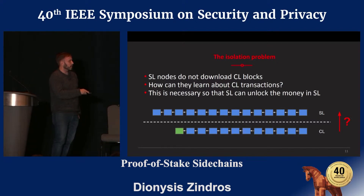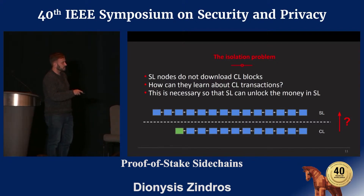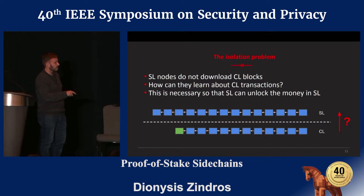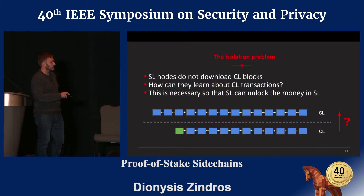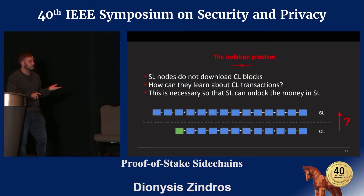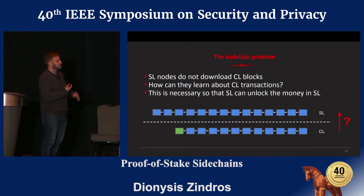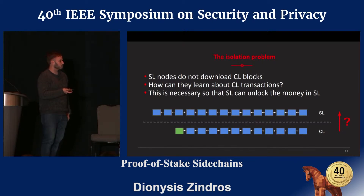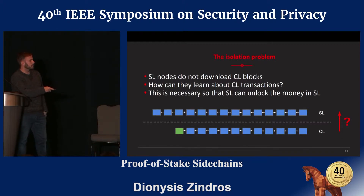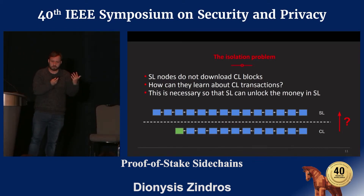The difficult problem is moving money back, because the settlement layer nodes — the SL nodes — even though we want them to validate all transactions confirmed within the settlement layer, they are not looking at blocks in the computation layer. We don't want to send them all the transactions or all the blocks of the computation layer. This is the isolation challenge: we want the settlement layer miners to learn about information that happens on the computation layer, but without actually connecting to it.